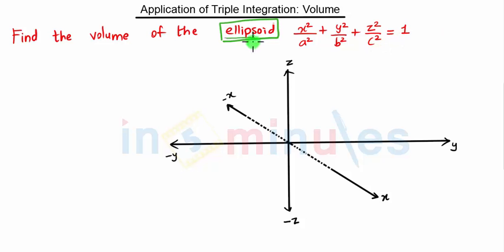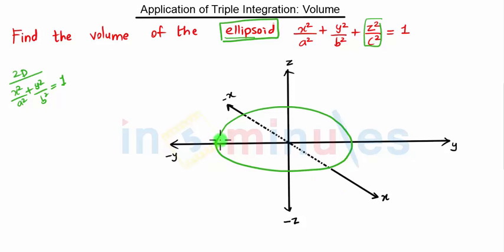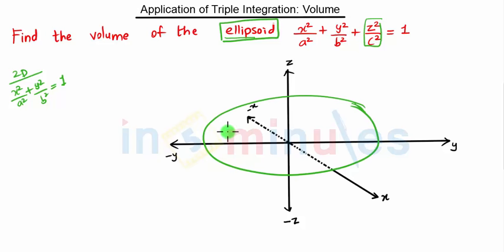We are given the ellipsoid in 3D. In 2D, our equation of an ellipse is x²/a² + y²/b² = 1, and here we have the additional z²/c² = 1 term. An ellipsoid looks like an ellipse but it is in three dimensions — this is our three-dimensional ellipse.